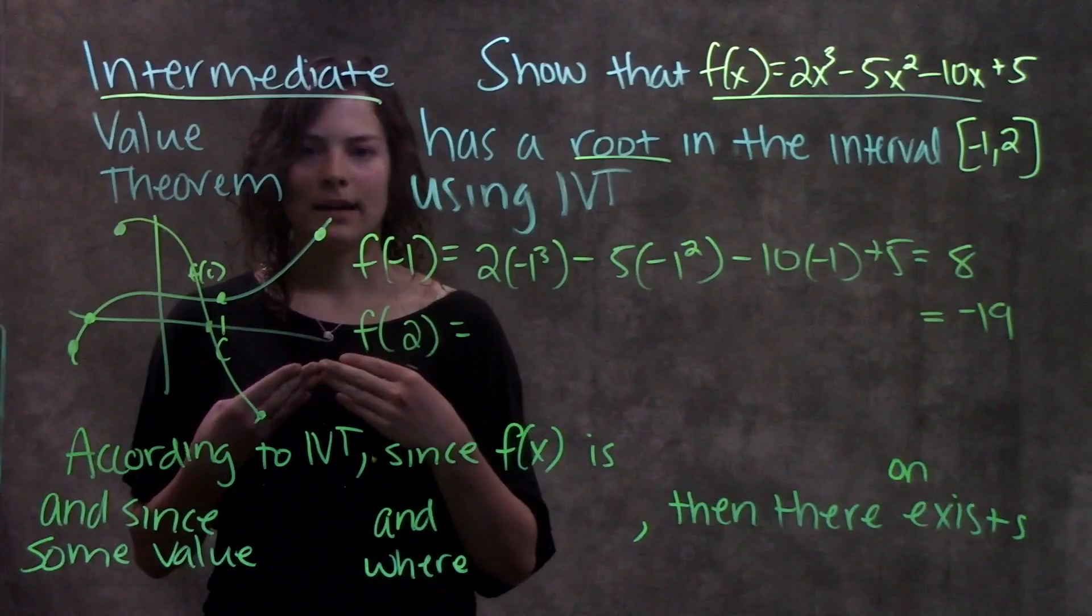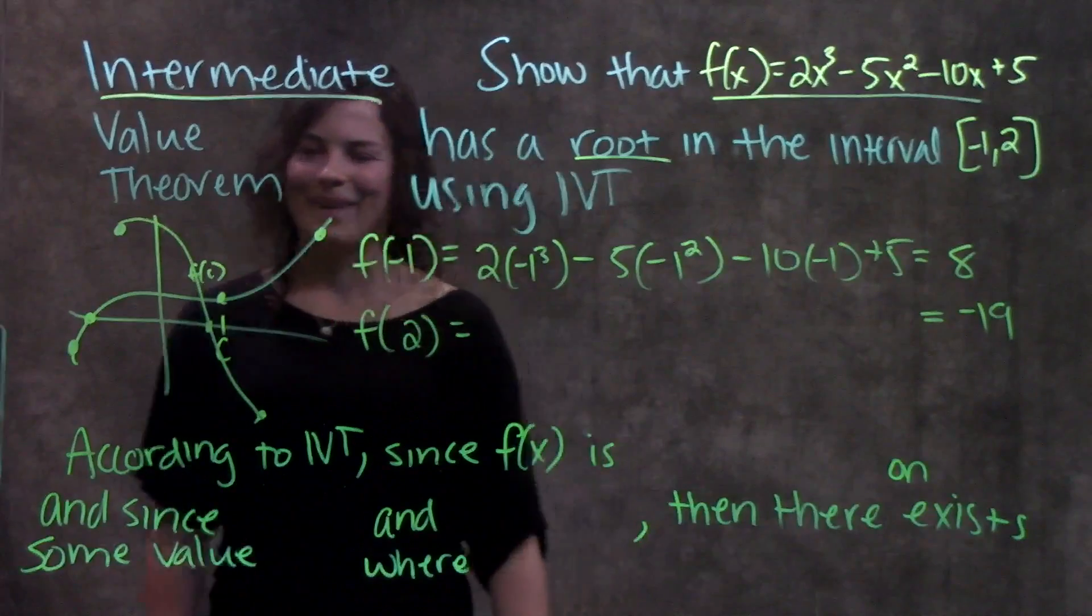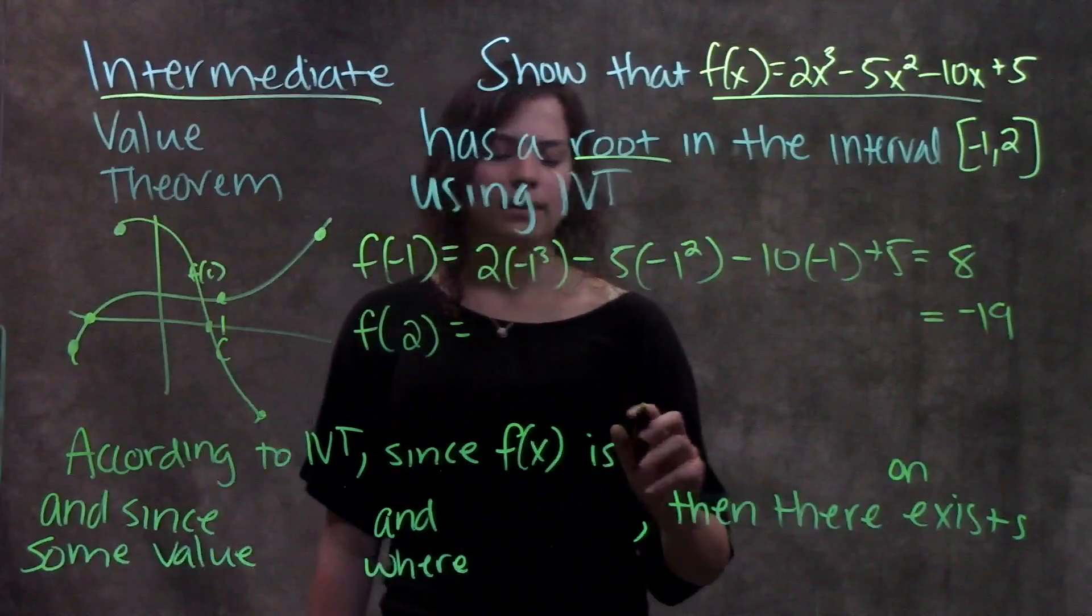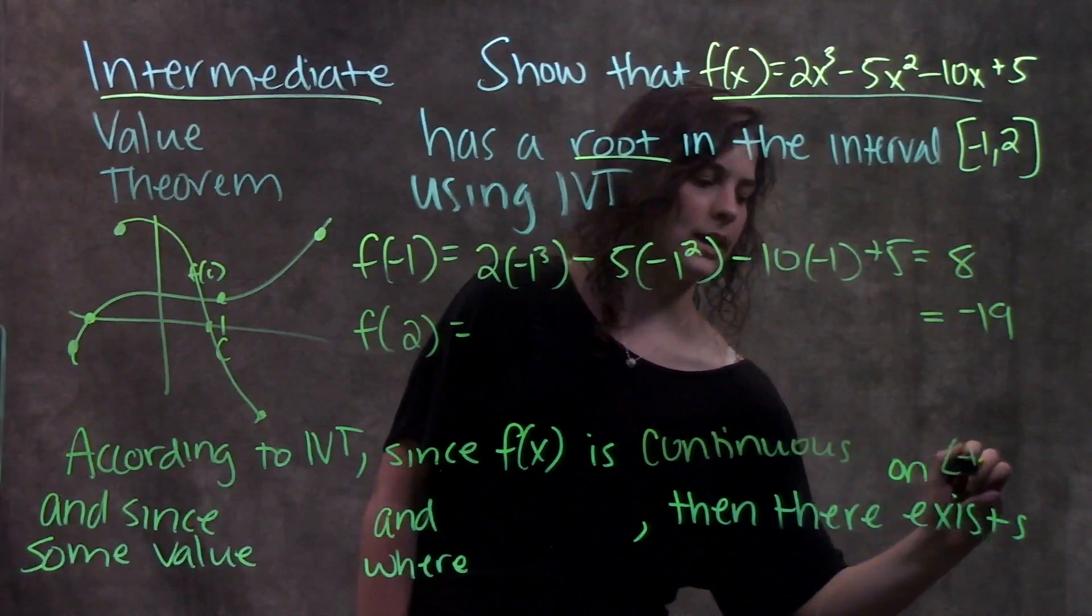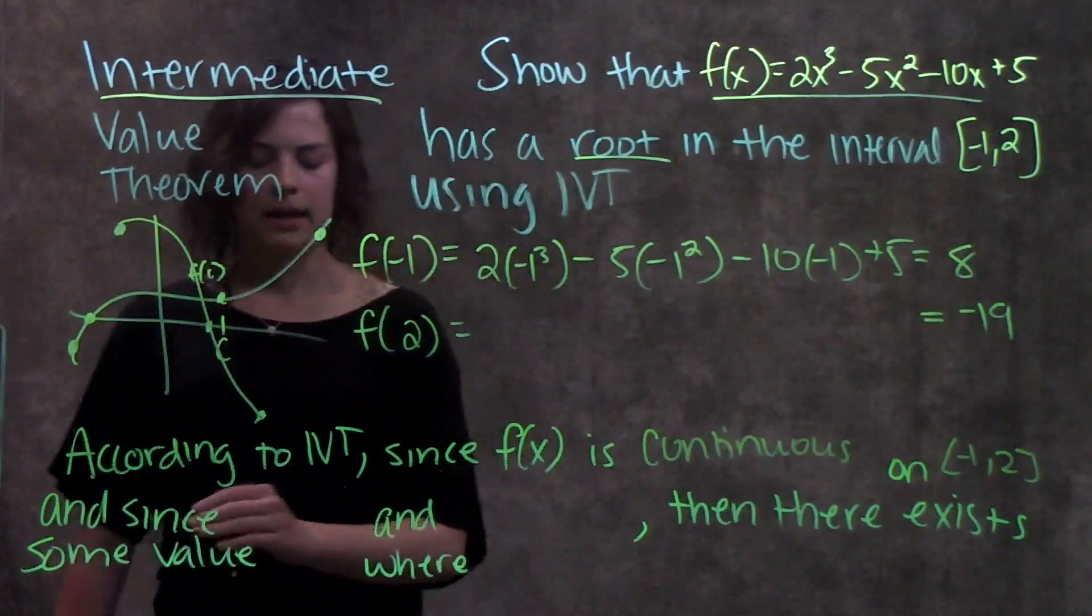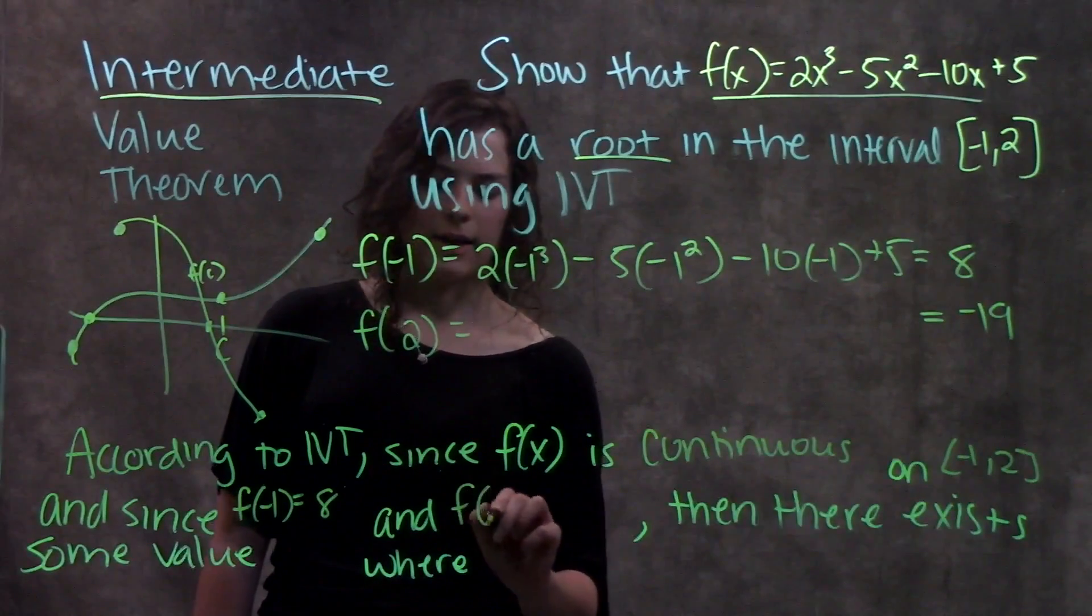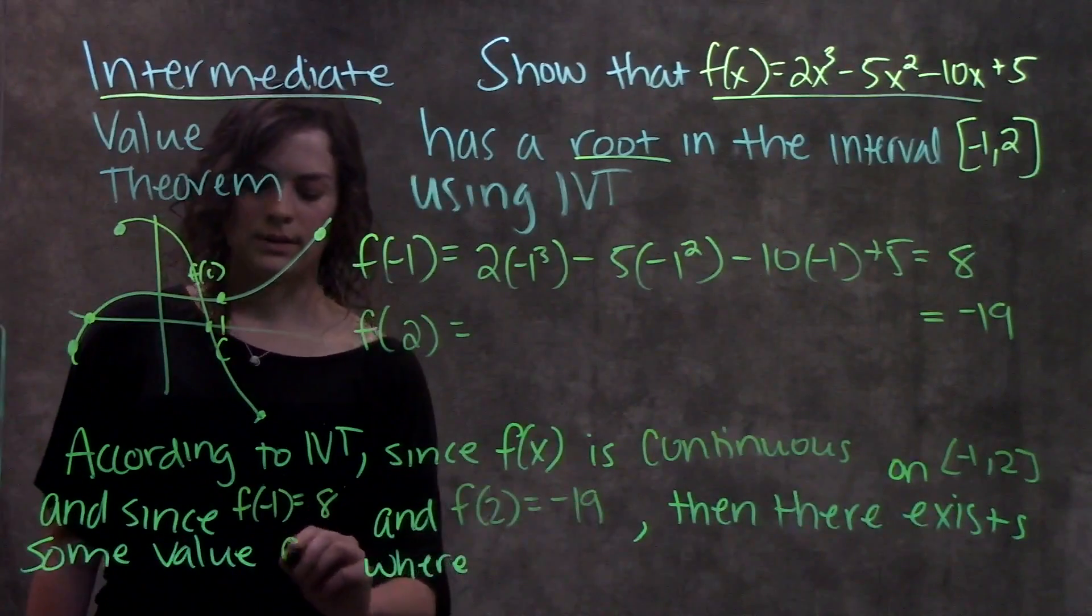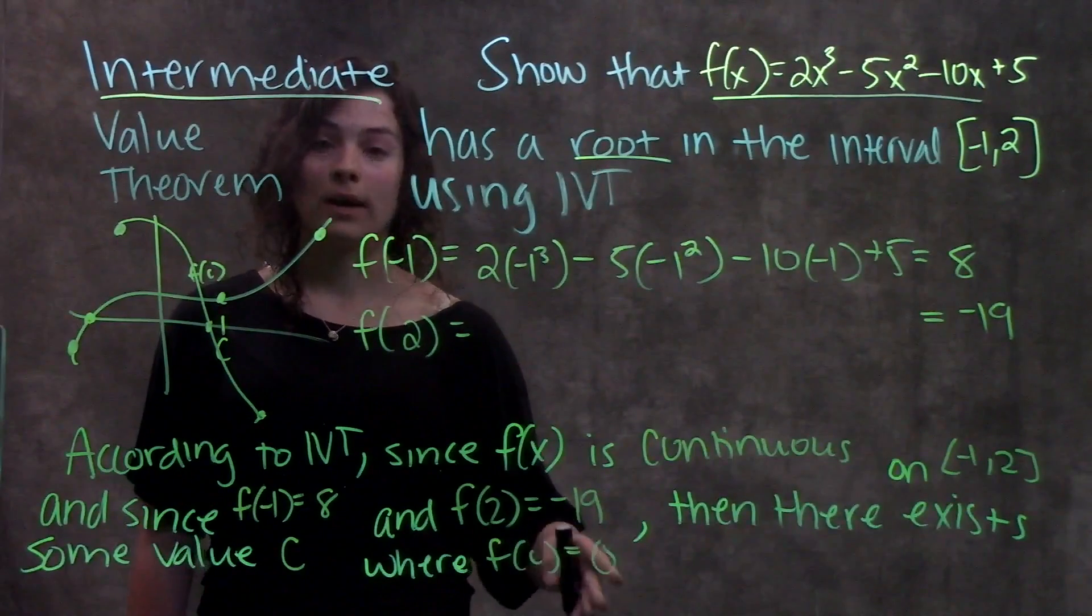But when you're writing this on a test, let's go through the words you should say so that you say it in fancy mathematical terms. A good way to write this as an answer is: according to the intermediate value theorem, since f of x is continuous on the interval negative one to two, because remember that was the first point that we had to verify, this function is continuous, and since f of negative one is equal to positive eight and f of two is equal to negative 19, then there exists some value c where f of c is equal to zero. In other words, where there's a root.